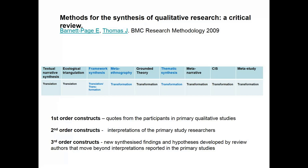The reason why we've chosen framework synthesis, thematic synthesis and metaethnography is that it allows you to do something called transforming the primary data in the primary studies. To explain this for those with no experience of qualitative evidence synthesis, you need to understand how findings are constructed. We classify first order constructs as quotes from participants in the primary study. When those quotes are grouped, coded and developed into a theme interpreted by the primary study researchers, they're called second order constructs. In a Cochrane context we want to go to a third order construct — new synthesized findings and hypotheses developed by the review team that move beyond the interpretations in the primary studies.